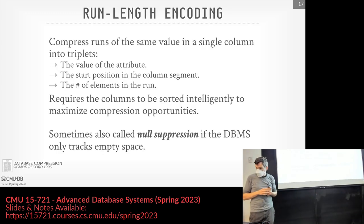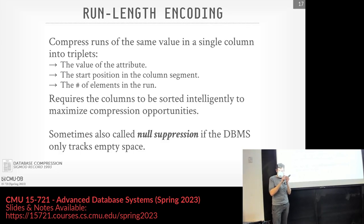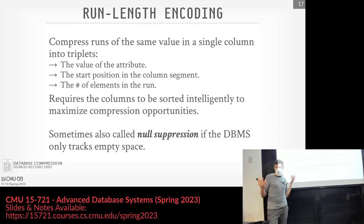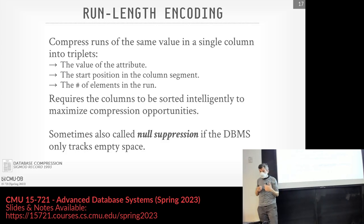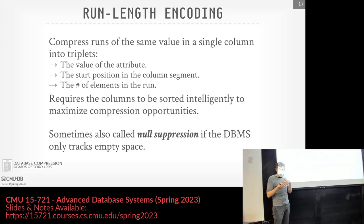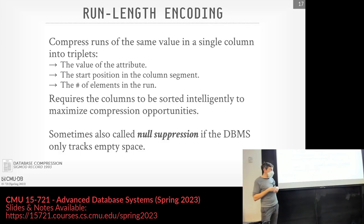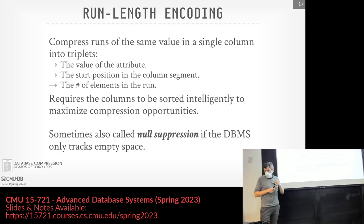Run-length encoding is exactly as it sounds: if we have repeated values for long strides in our data, instead of storing the exact same value over and over, we store a summary. We say: for this given value at this starting position in our column, here's how many occurrences there are of it — ideally in some compact form. To get the most benefit you'll need to sort the data ahead of time, though this gets tricky because sorting on one key versus another could affect the efficacy of RLE. This is sometimes called null suppression in the literature — basically the same idea but tracking how many nulls you have.